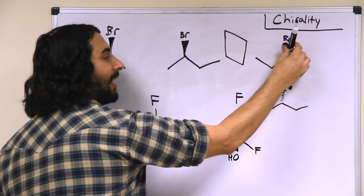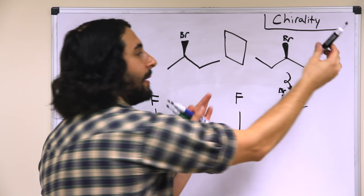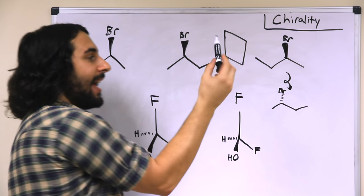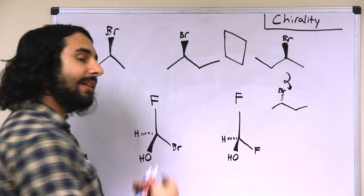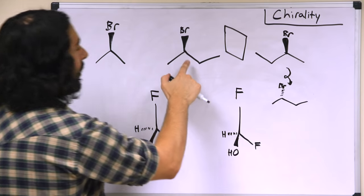Because if the bromine atom is on the wedge bond out of the board like this, if we flip the whole thing 180, now the bromine is going to be going into the board. So if we try to place this on top of that molecule, it is not going to line up properly.